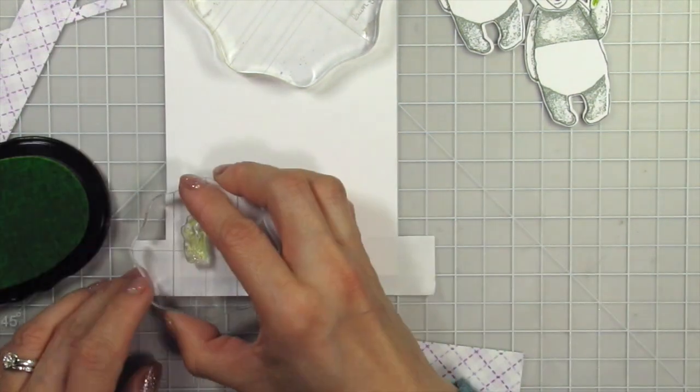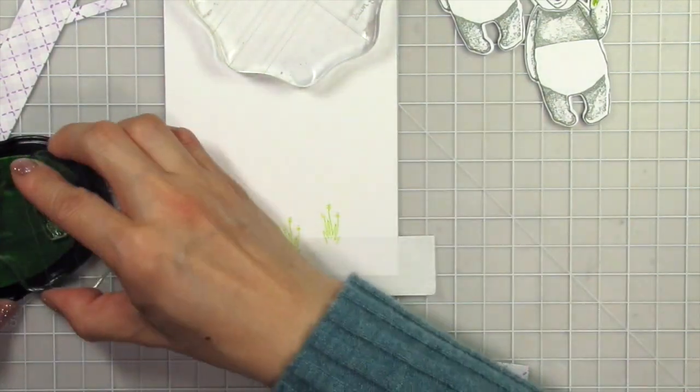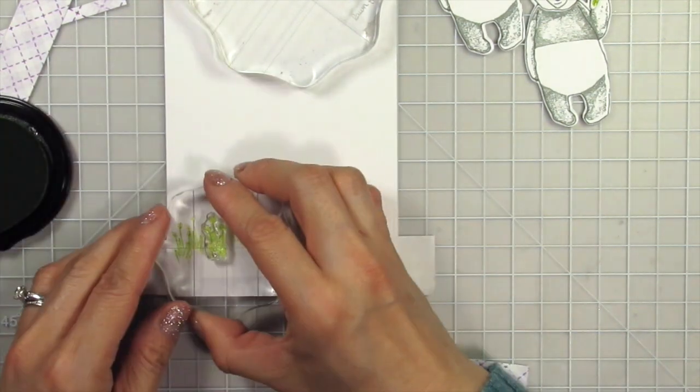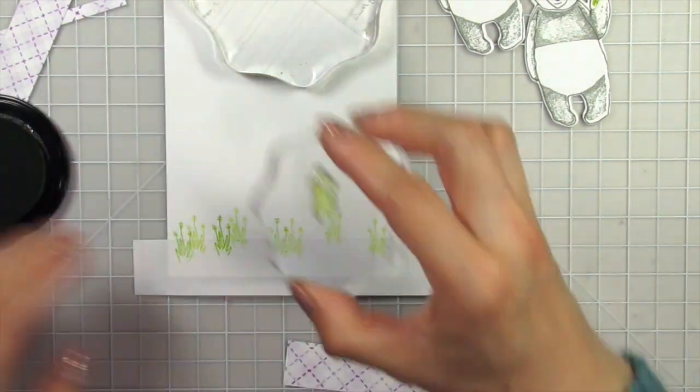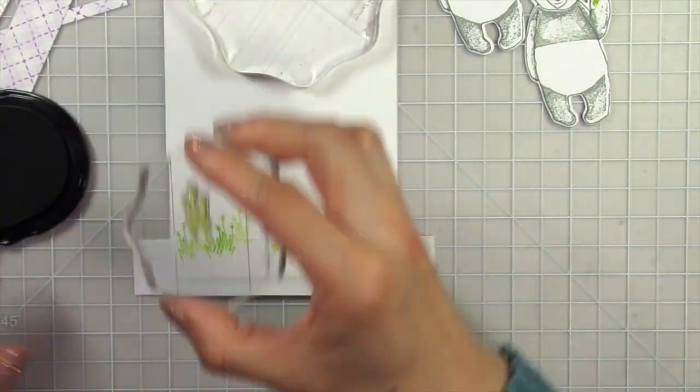I trimmed the gingham background into four sections. Two sections are 5 eighths of an inch for the bottom strip and 2 eighths of an inch for the top strip. I used my design ruler to draw a line and mask off the bottom section so I can stamp the grass in three shades of green.